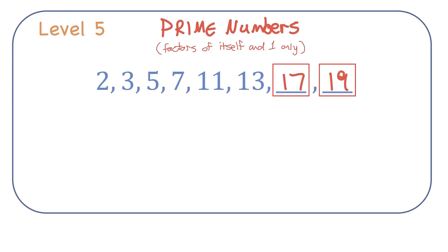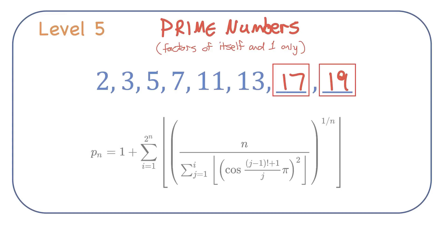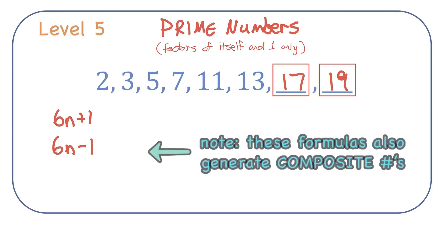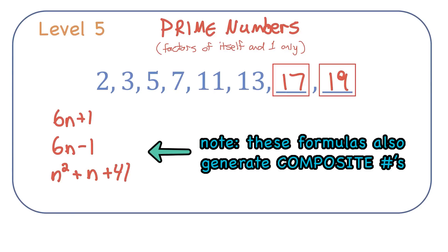Coming up with a formula that can generate the next prime number would be very complicated. There's something called Wilson's formula that attempts to do that, but there are some simpler formulas such as 6 times n plus 1, or 6 times n minus 1, which are good at generating primes, but they might also generate composite numbers, so they're not perfect. The formula n squared plus n plus 41 is also great at generating primes bigger than 40.